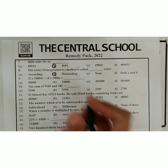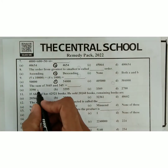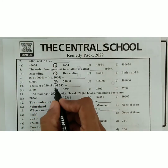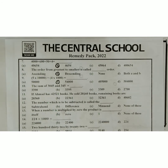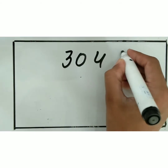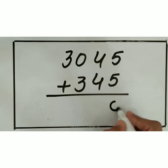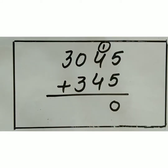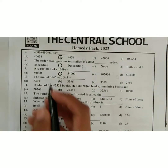Circle 54,000 in the options. Next, question ten: the sum of three thousand forty-five and three hundred forty-five. Moving to the board — three thousand forty-five plus three hundred forty-five: five plus five is ten, carry one; four plus four is eight, eight plus one is nine; zero plus three is three; and three. The answer is three thousand three hundred and ninety. Circle this.